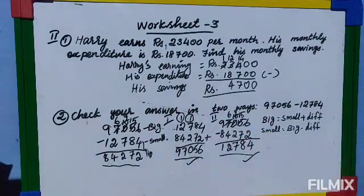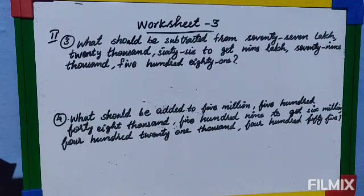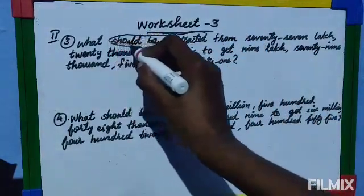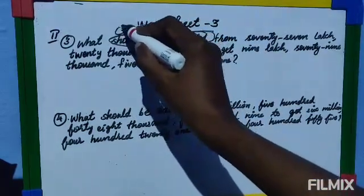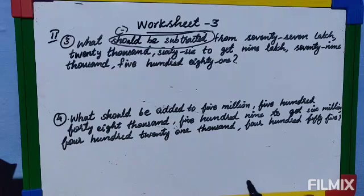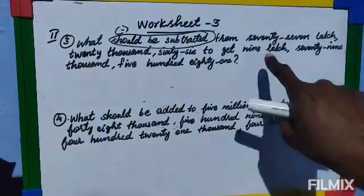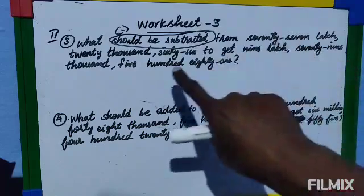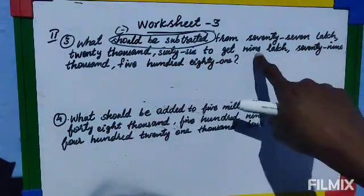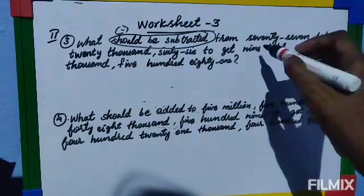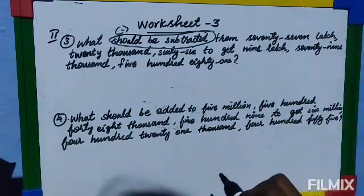Third sum: What should be subtracted from 77 lakh 20,066 to get 9 lakh 79,581? The keyword 'should be subtracted' tells you to perform subtraction — always mark and learn keywords. The numbers are given in number names, which makes it look long. To do subtraction, always write the bigger number first. Here 77 lakh is bigger than 9 lakh, so write 77 lakh first.